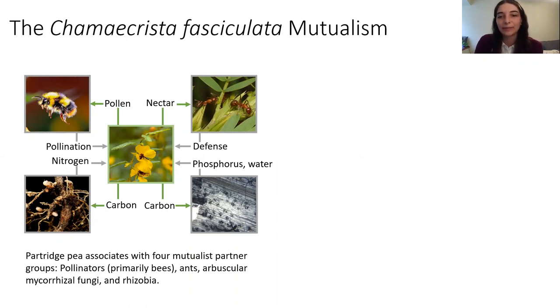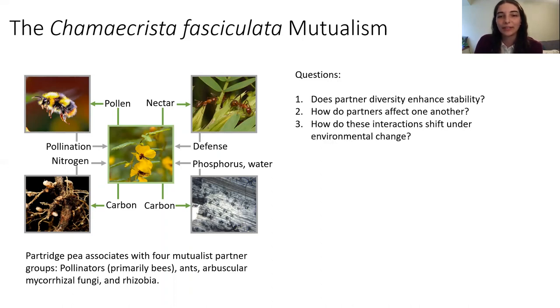We're interested in modeling species interactions to evaluate how partner diversity affects the fitness of Chamaecrista fasciculata plants. Specifically, does partner diversity enhance stability? How do partners affect one another? And how do these interactions shift under environmental change?